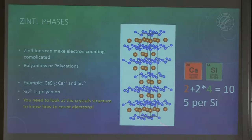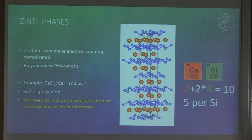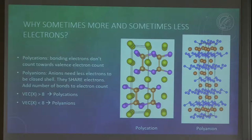There are actually a lot of phases that do these things - they're called Zintl phases. A really famous one is calcium silicide, and I think Josh is going to tell more about this particular compound later. In this compound, you have silicon atoms which are bonded to each other. If you count the electrons, it doesn't match at all with your electron count, but you still have a charge balanced compound. The really important point is you really have to look at your crystal structure before you count your electrons and see if there's any bonding you have to account for. You cannot just blindly count electrons. In one example we had 19 electrons - more than expected - and here we had 5 electrons per silicon - less than expected.